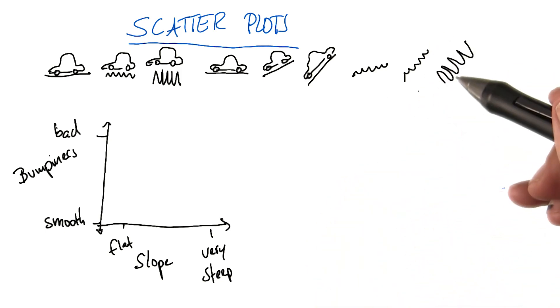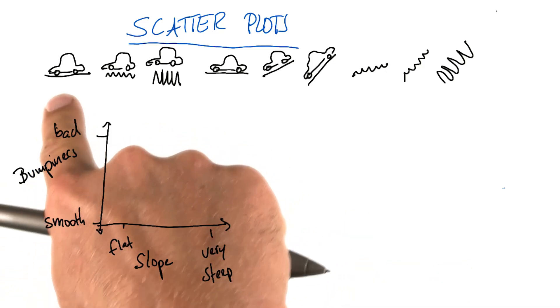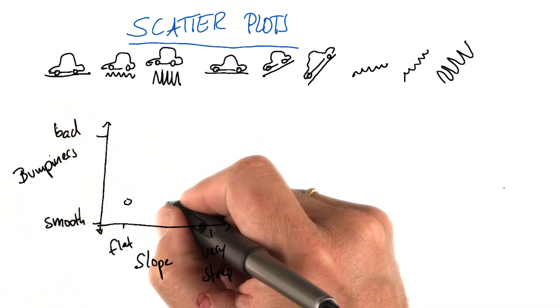So what I want to do with you is just map these training examples over here of, say, a flat, smooth road into our diagram over here.